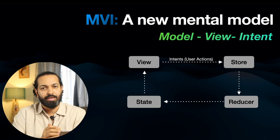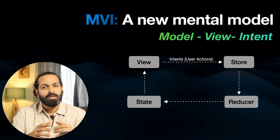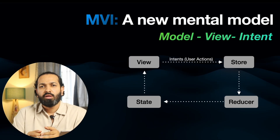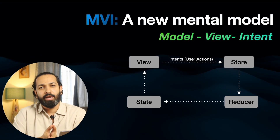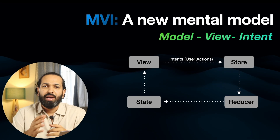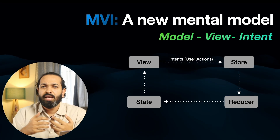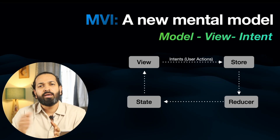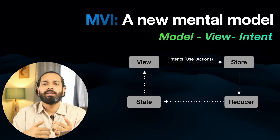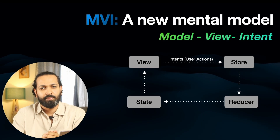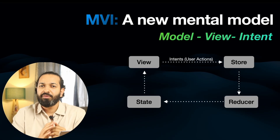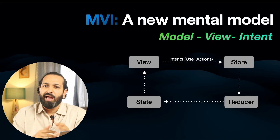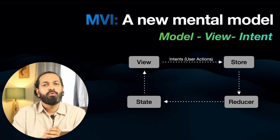Let me help you visualize it. The view sends intents, and these intents are nothing but user actions. Those intents go to a store, which acts like a brain. The store passes them to a reducer. The reducer decides how the state should change based on the intent, and then returns a new state, and the view simply renders itself from that updated state. That's the basic idea — it's a unidirectional flow of data. Publishers are not firing randomly from anywhere.